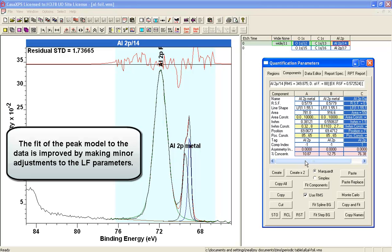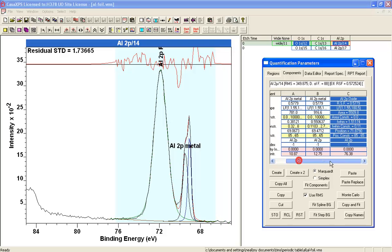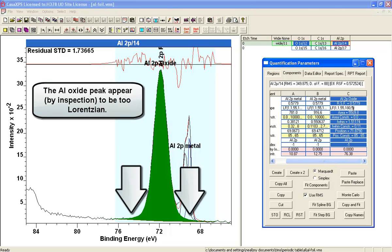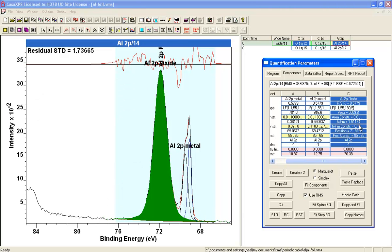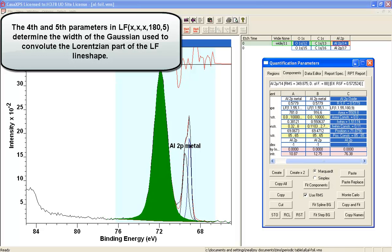So we'll begin by refining first of all the oxide peak, and you can see that the wings of the oxide are quite extensive. So what I'm going to do is apply a little more Gaussian contribution.